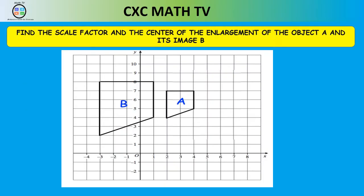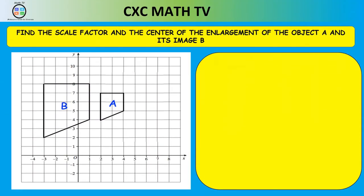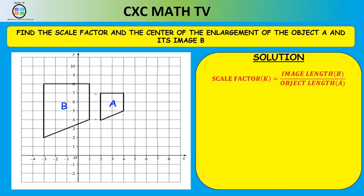Here's a question for you to try: find the scale factor and center of enlargement of object A and its image B. To find the scale factor, we use image length B over object length A. The side measured on the image is 6 units and the corresponding side on the object is 3, so the scale factor is 6 over 3, which equals 2.